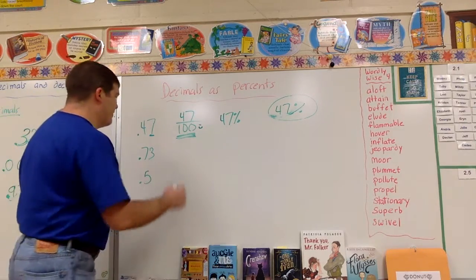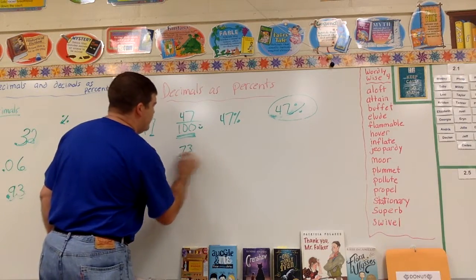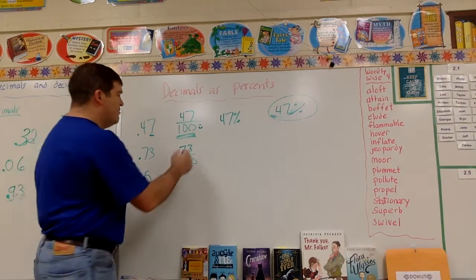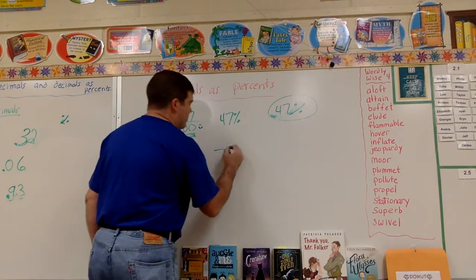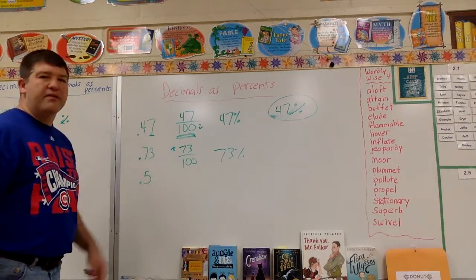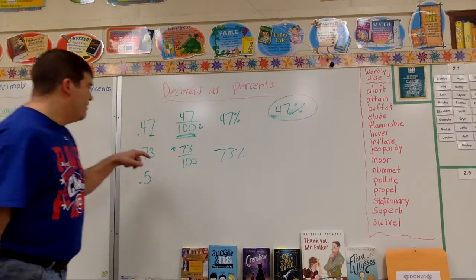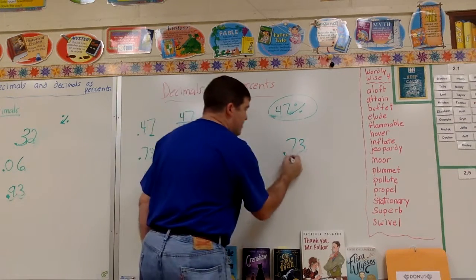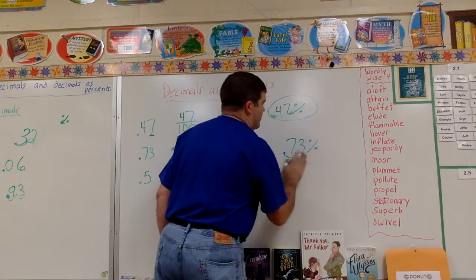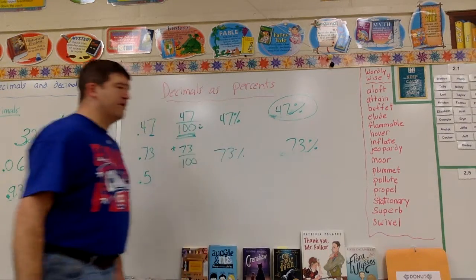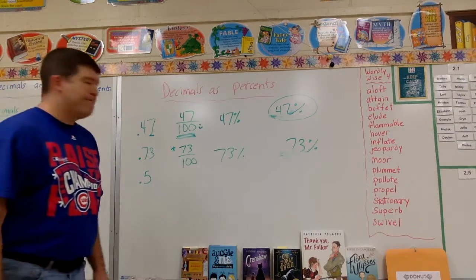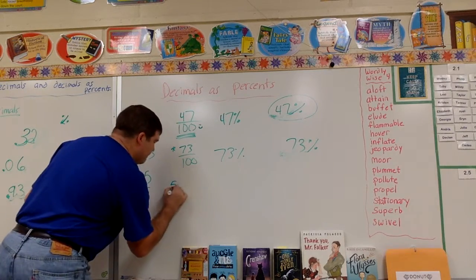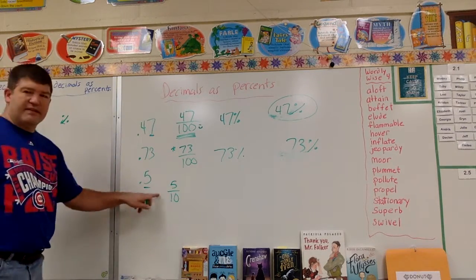For 0.73: it's 73 hundredths, so the denominator is already 100. Whatever's on top is my percent — 73 percent. Or using the shift method: move the decimal one, two places to the right and get 73 percent.